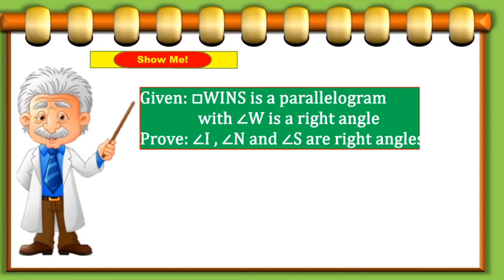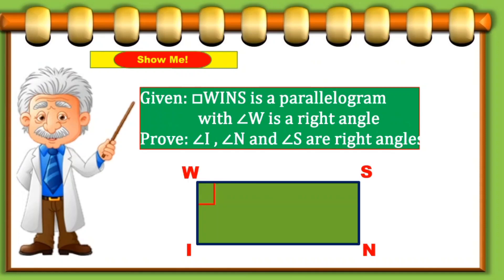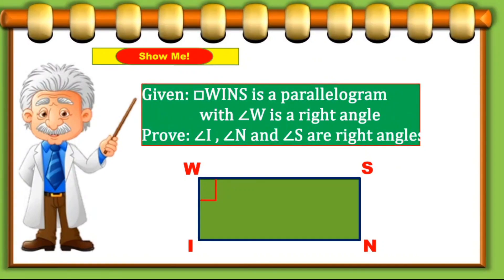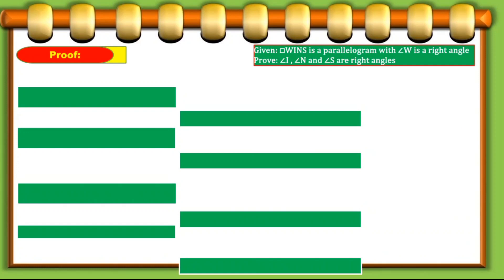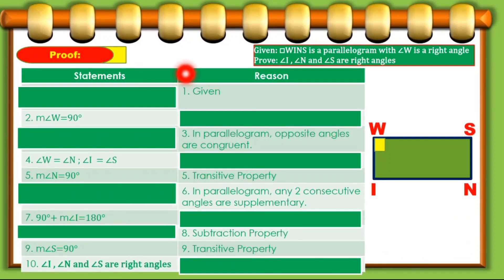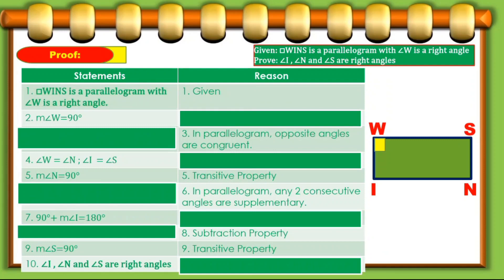Alright, so let's take an example. Given that rectangle WINS is a parallelogram with angle W is a right angle, we are asked to prove that angle I, angle N, and angle S are right angles. So we're going to supply what is missing in our statements and at the same time in our reasons. For the first reason, you would have it there: given. So the statement would be that rectangle WINS is a parallelogram with angle W is a right angle.